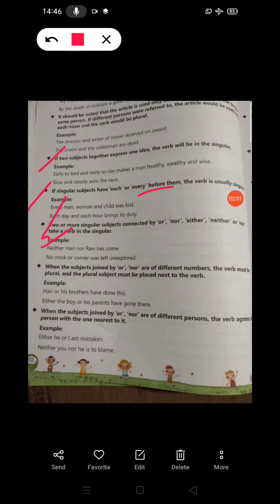When the subjects joined by or nor are of different numbers, the verb must be plural and the plural subject must be placed next to the verb. For example, Hari or his brothers have done this. Either the boy or his parents have gone there.